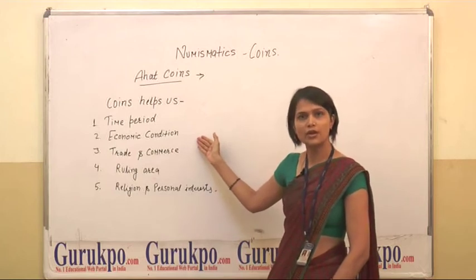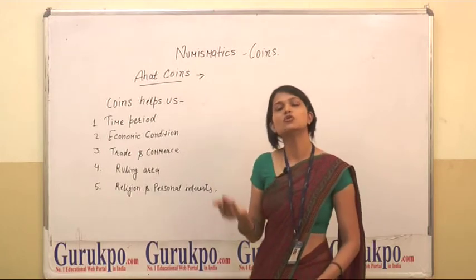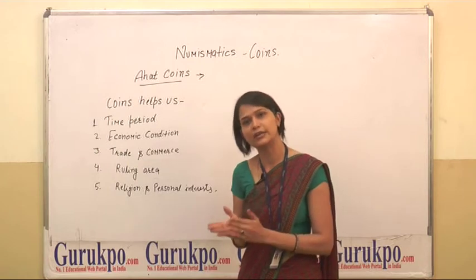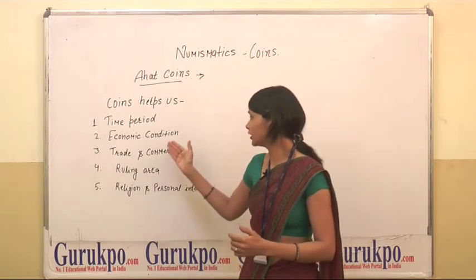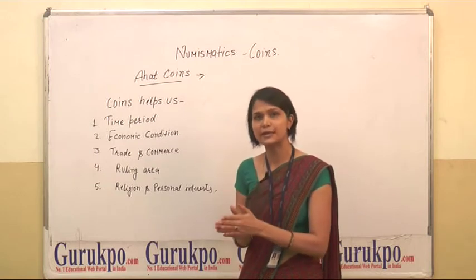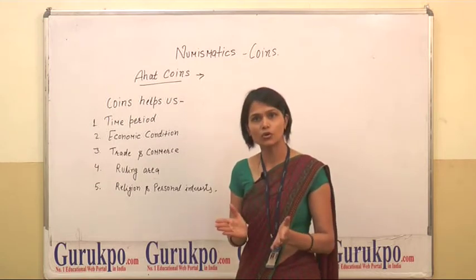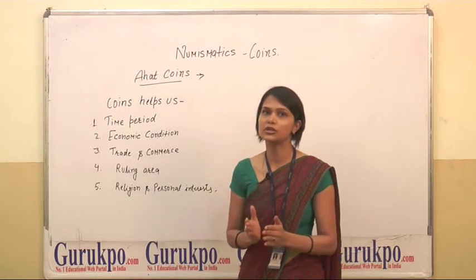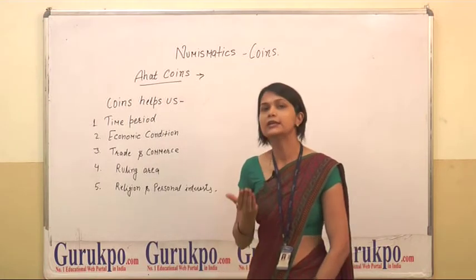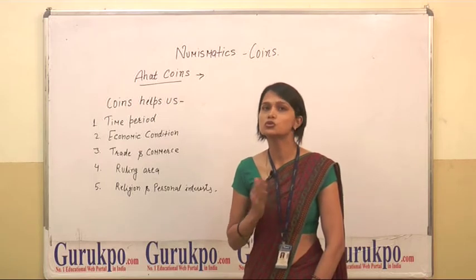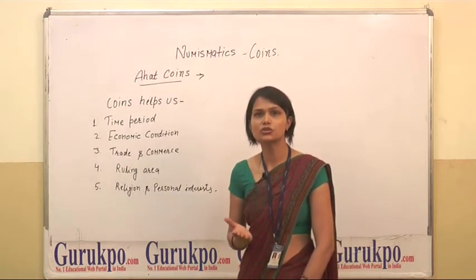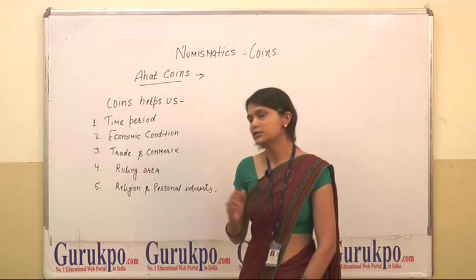Second, economic condition. Through coins we come to know about the economic condition of that related dynasty or time period, because the economic condition shows through the quantity and material of coins. For example, if we find gold coins then it shows economic condition was very good. But if we find silver coins then it shows economic condition was not so good. But if we find metal mixed coins then it shows economic condition was very low.